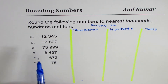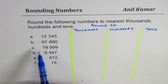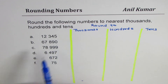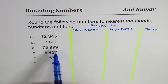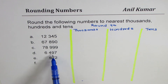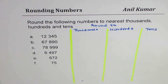The numbers which we are going to work with are: 12,345; 67,899; 79,964; 6,497; 672; and 75. You can always pause your video, answer the question, and then look into my suggestions.